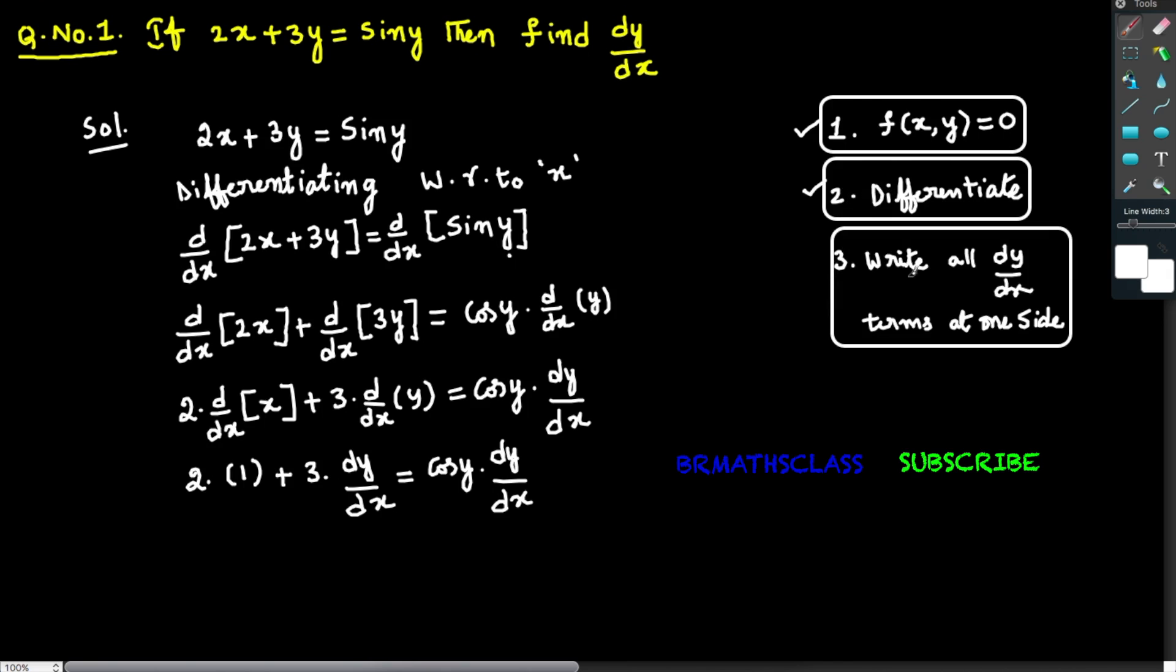You observe in left hand side also dy by dx terms are there and right hand side also dy by dx terms are there. So, I will write all dy by dx terms at one side. You take cos y into dy by dx to left hand side, then it will become minus cos y into dy by dx. That equal to, in left hand side, 2 into 1 is 2 is there, you take it to the right side, then it will become minus 2.